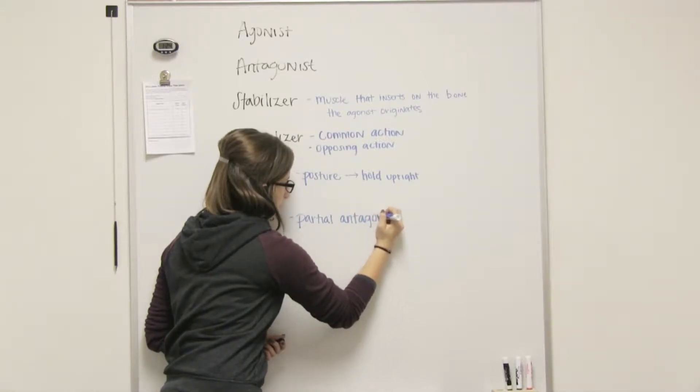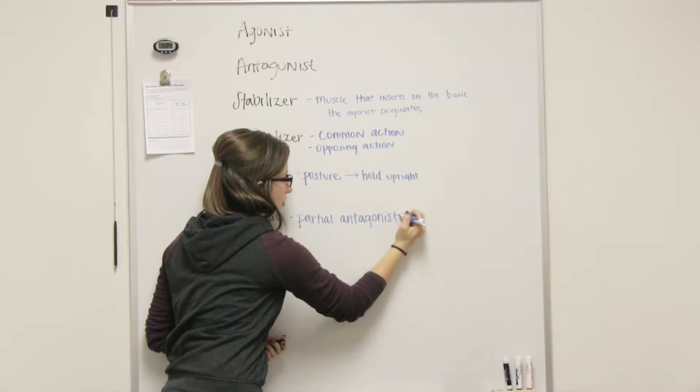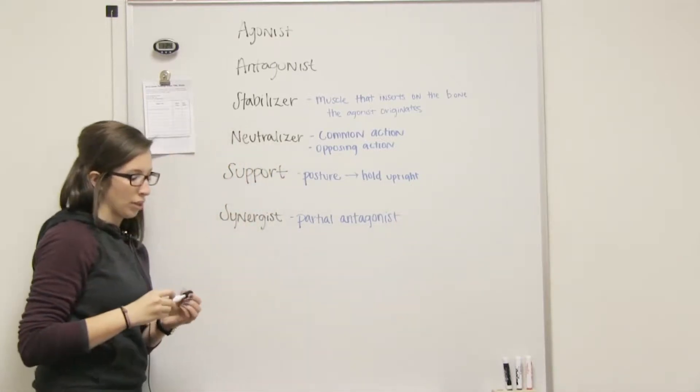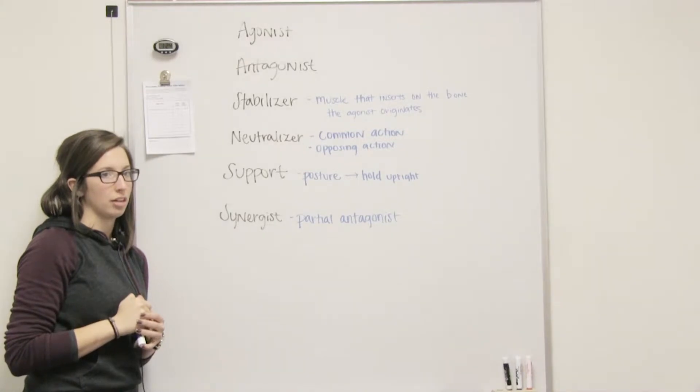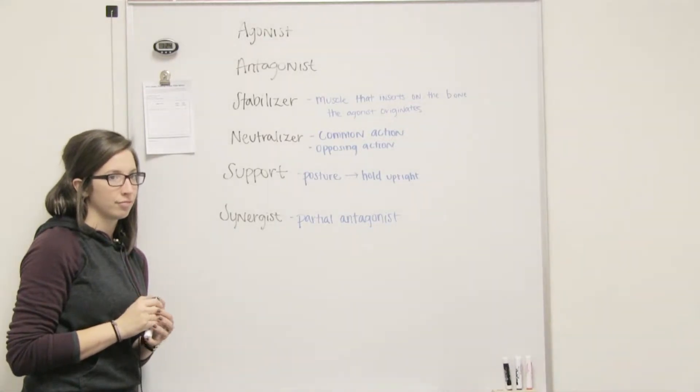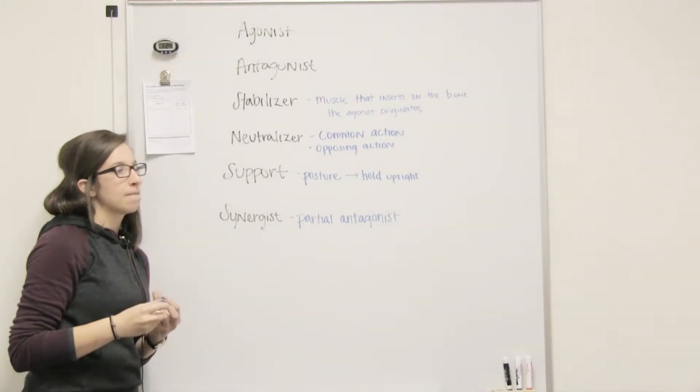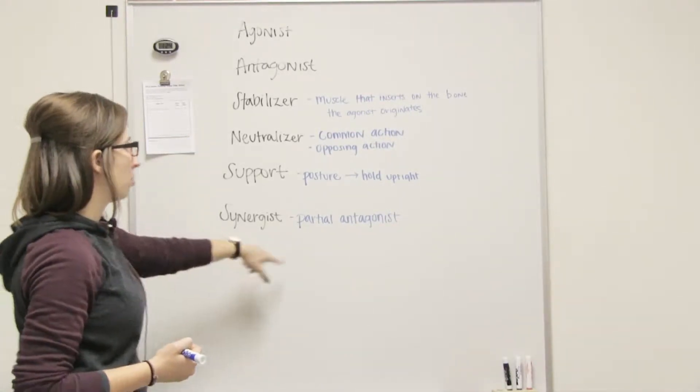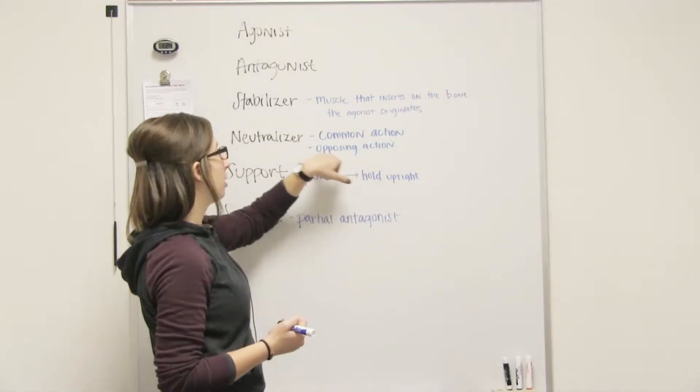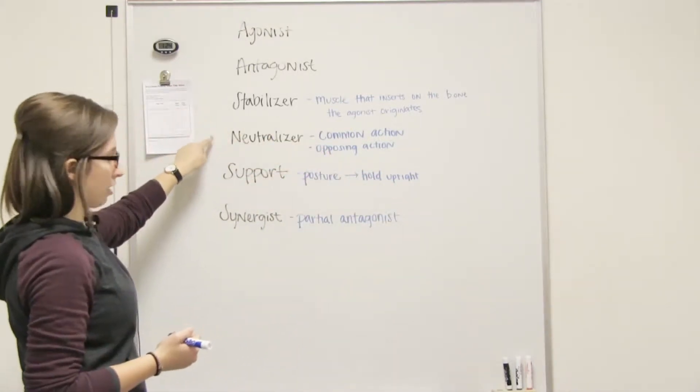Because remember, when it comes to muscles, when they contract, they want to perform all the actions they possibly can. So this is going to help neutralize even though it's not a neutralizer? The difference between a synergist and a neutralizer is that this one only has the antagonistic action. This one has a common action.